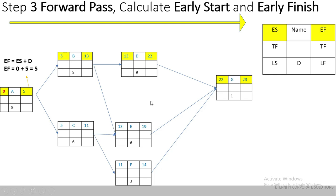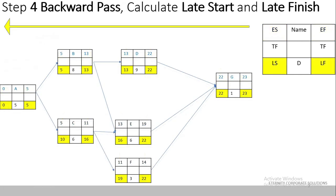To calculate the early start of successor activities, the rule is: Early Start of successor = Early Finish of predecessor. For Activity B, its predecessor is Activity A with early finish of 5, so we replicate 5 into the early start of Activity B. Using this method we calculate all the early start and early finish values in the network diagram, as shown by the arrows. Step 3 is done.